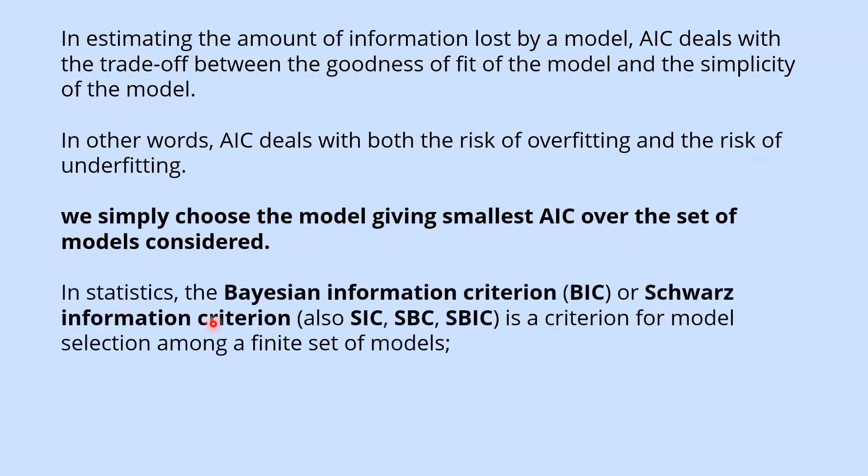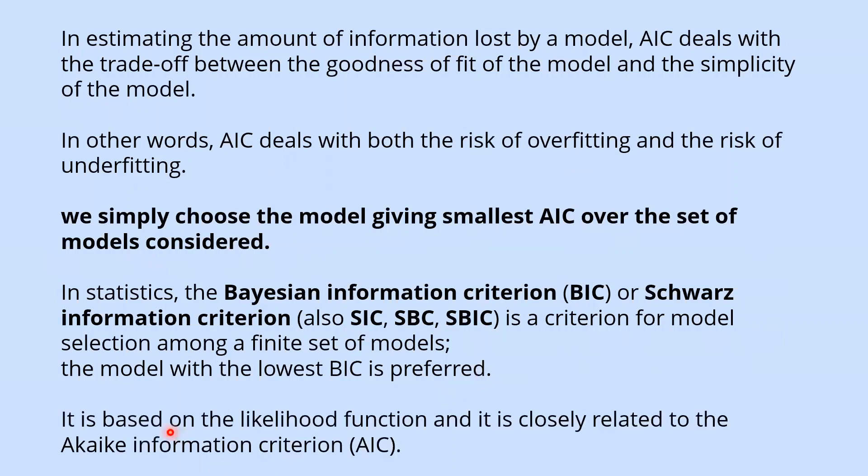In statistics, the BIC or Schwarz information criterion (also SIC, SBC, SBIC) is a criterion for model selection among a finite set of models. The model with the lowest BIC is preferred. It is based on the likelihood function and it is closely related to the AIC.